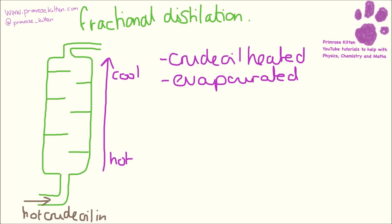The column is hotter at the bottom and cooler at the top. It has this temperature gradient because as the little bits go in, what they're going to do is work their way up and find the point at which they condense. At the point that they condense, they're going to come off as a fraction.